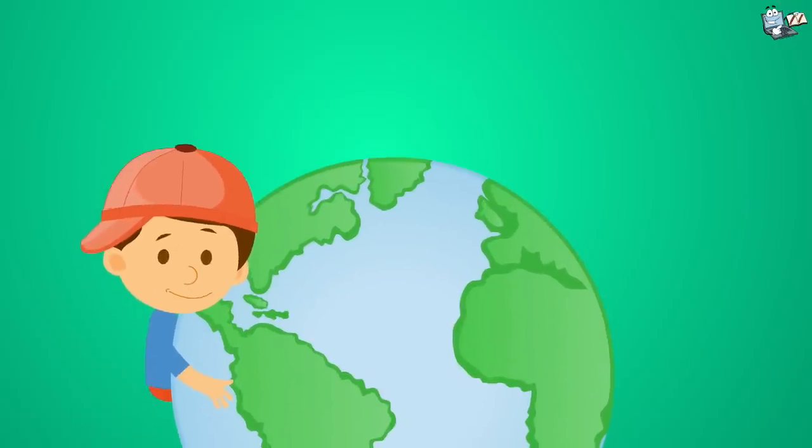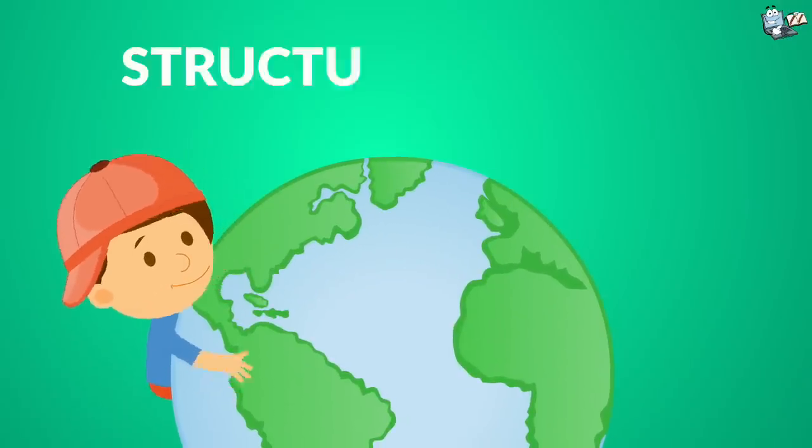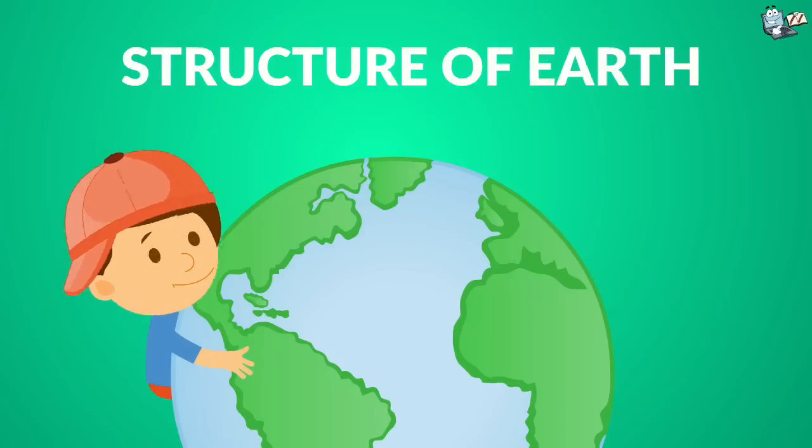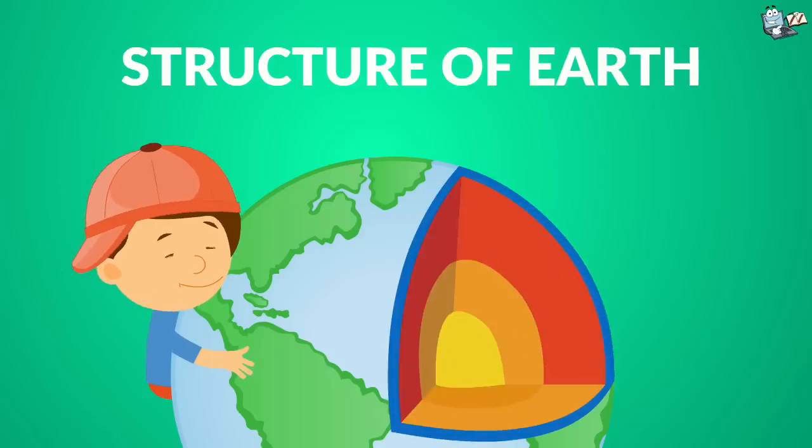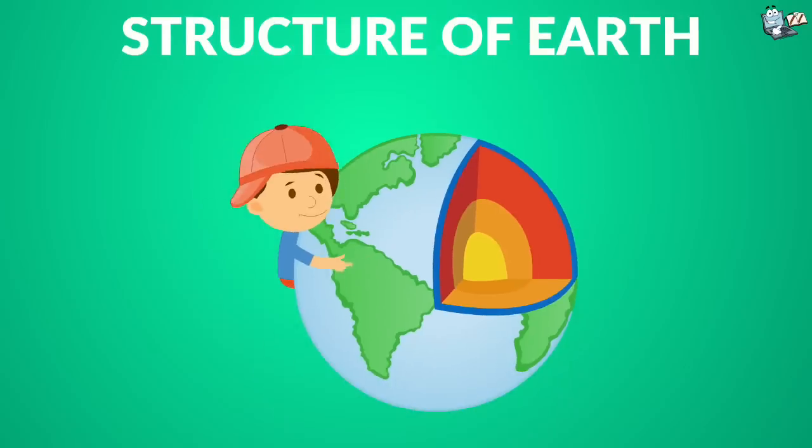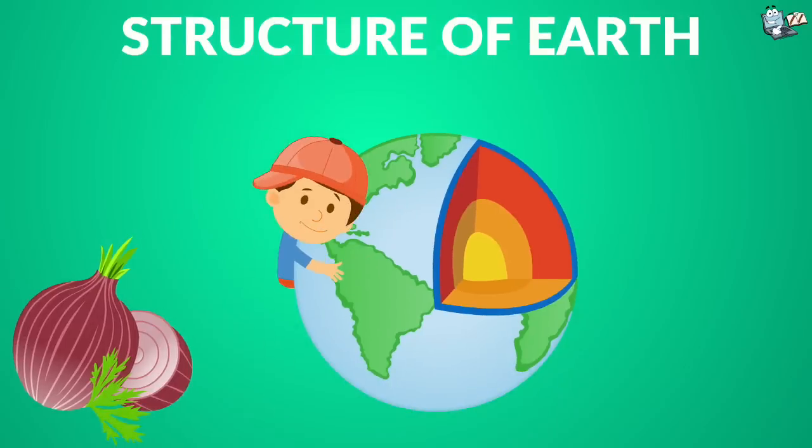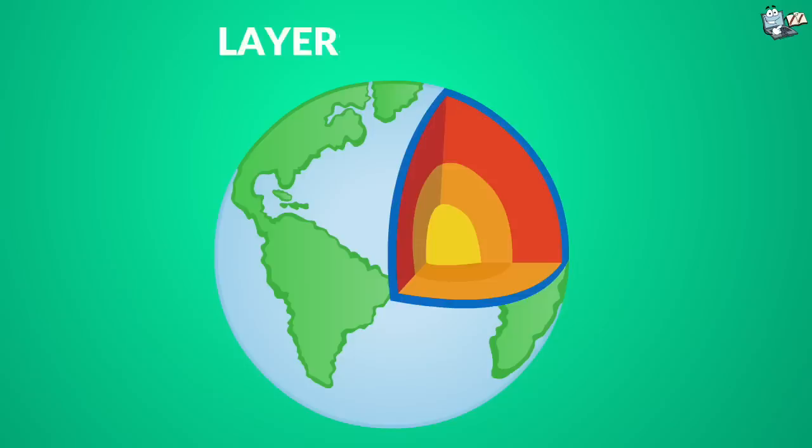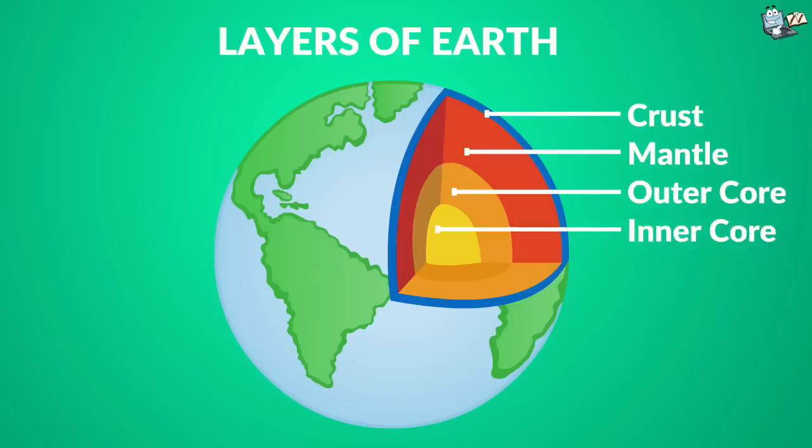To understand volcanoes, let's study about the structure of the Earth first. Earth is made up of a number of layers, like an onion, or like an apple. The four main layers of the Earth are the crust, mantle, outer core, and inner core.